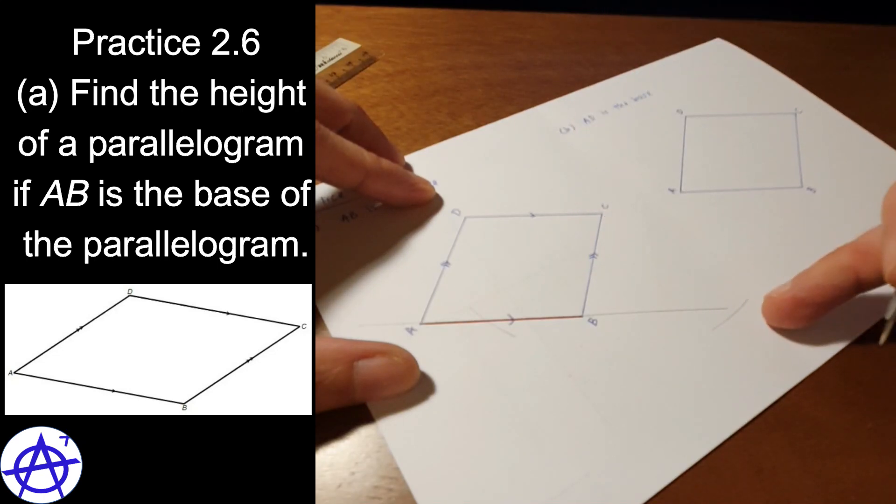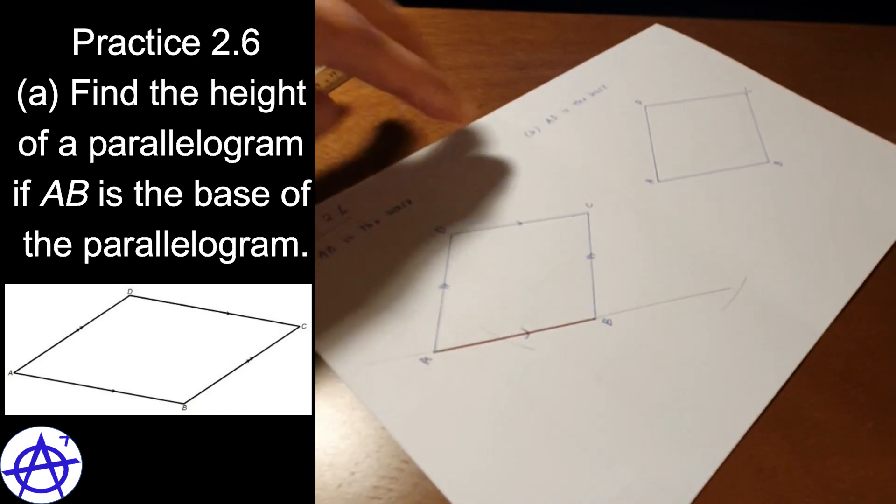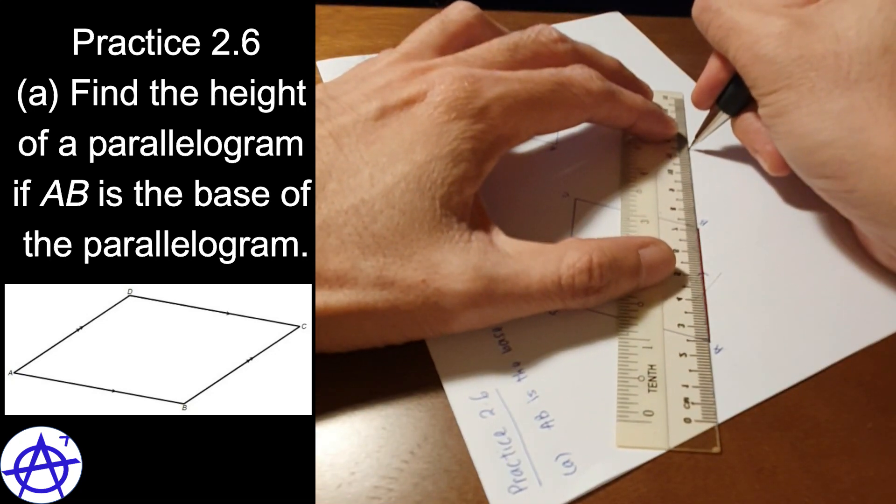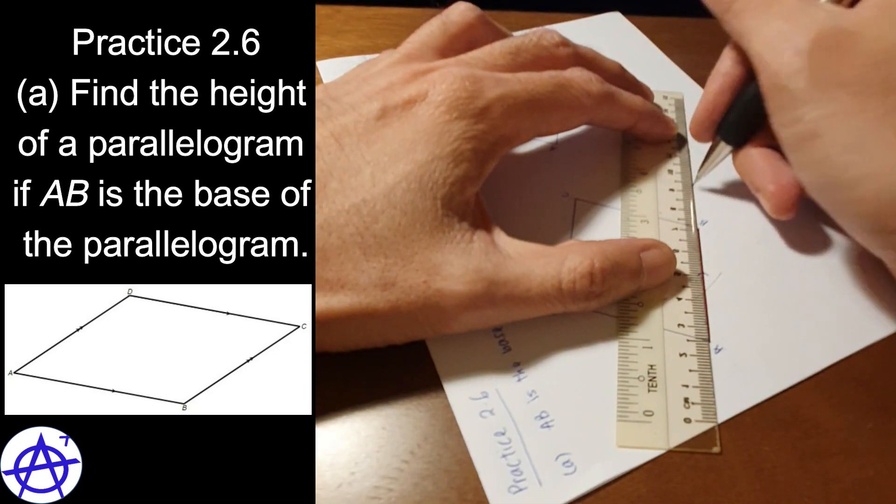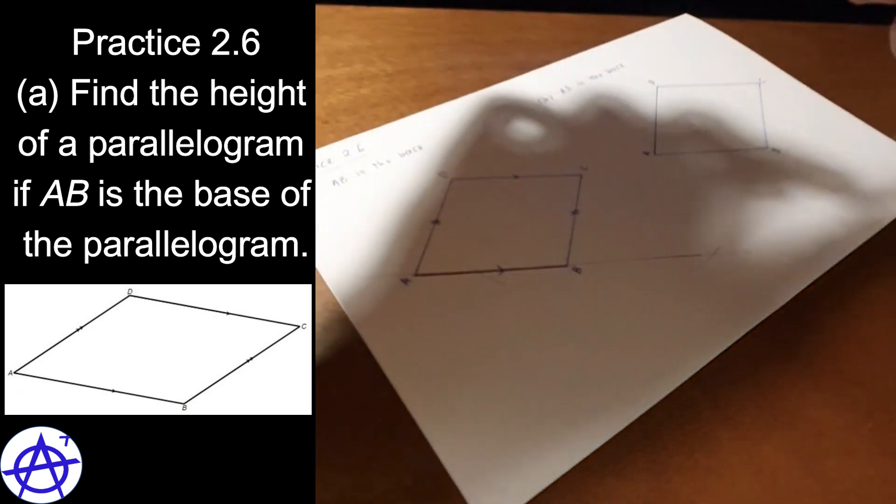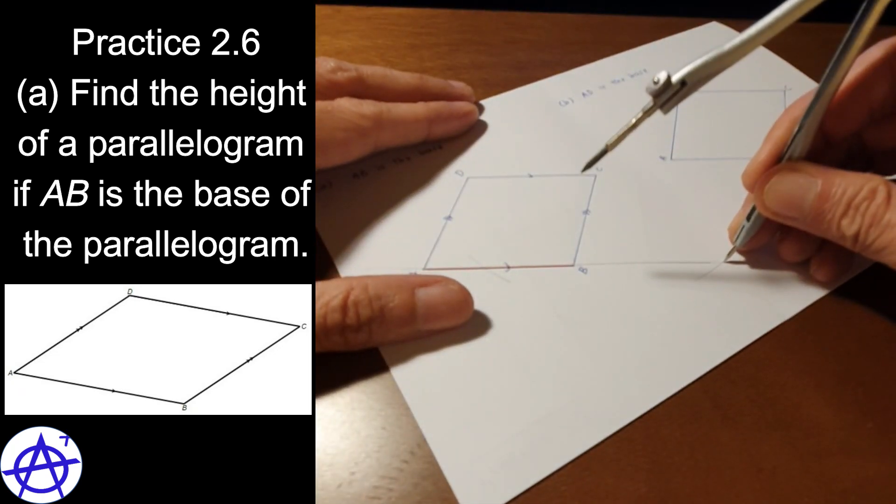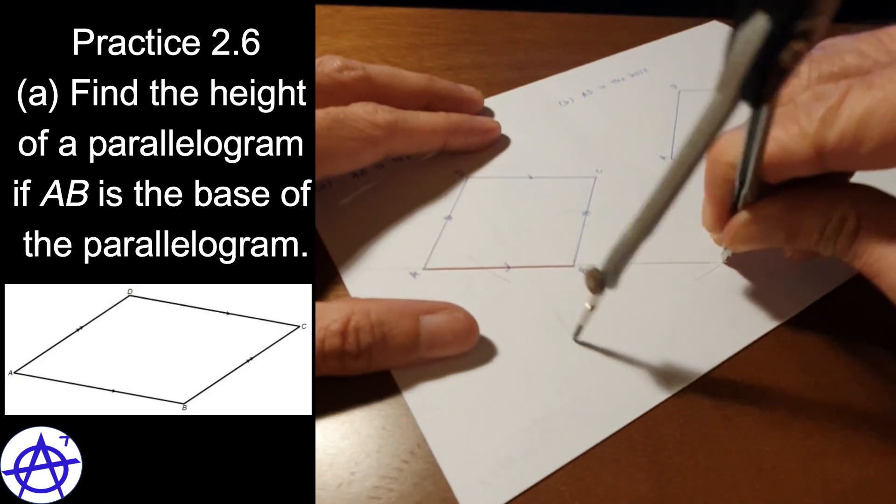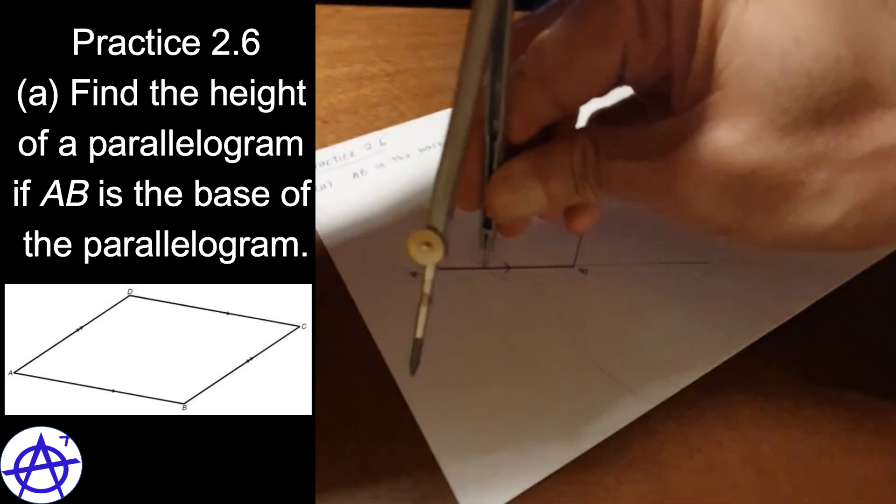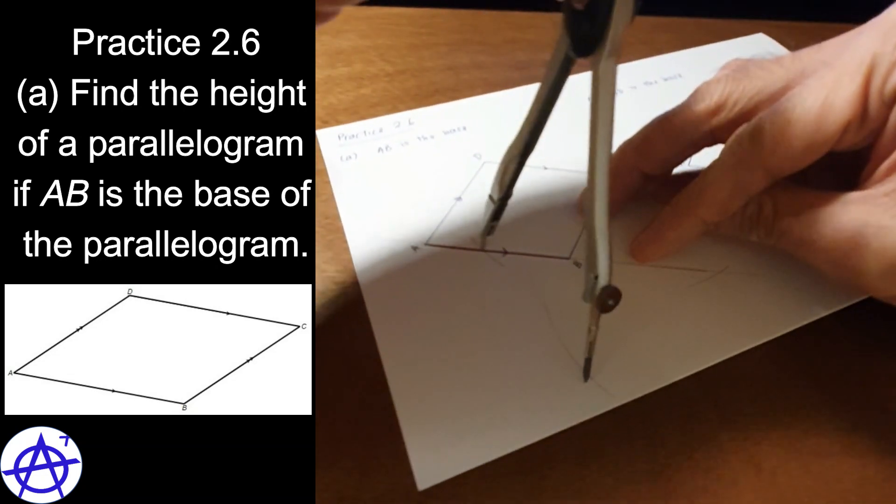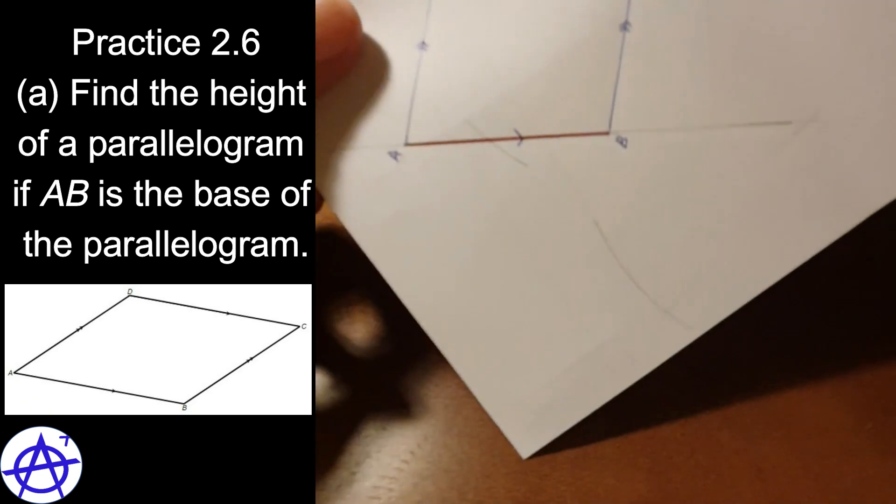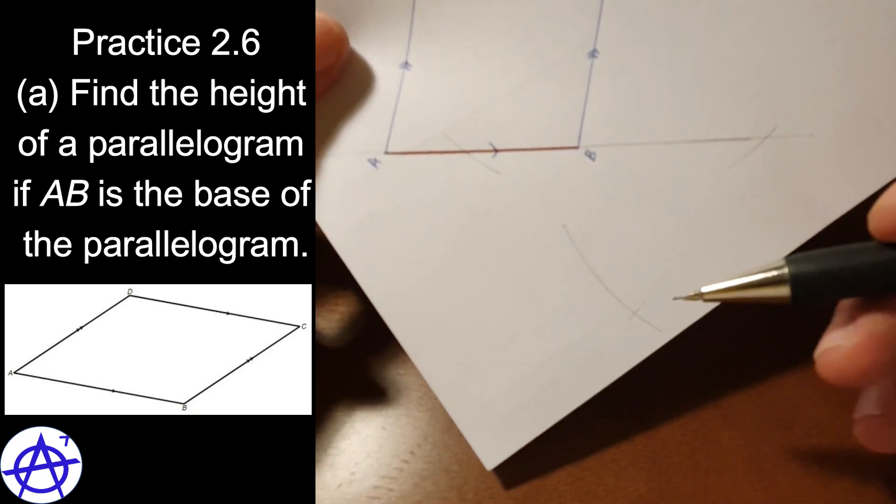So you see, if there are no intersections, what I have to do is just extend the line. Now what I'm going to do here is, from these two points, I make an arc and then I move over here and make another arc, so that there is a point of intersection here.